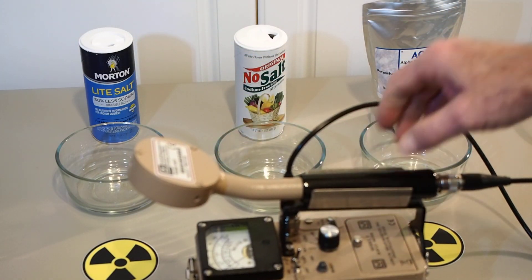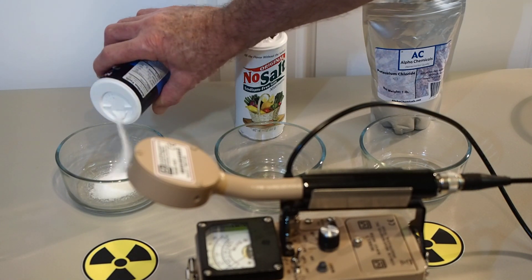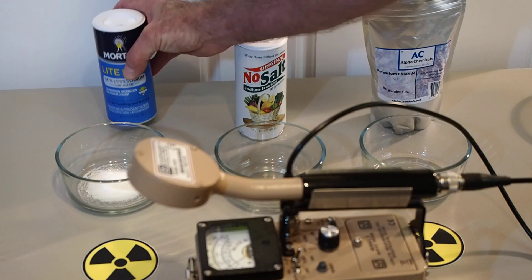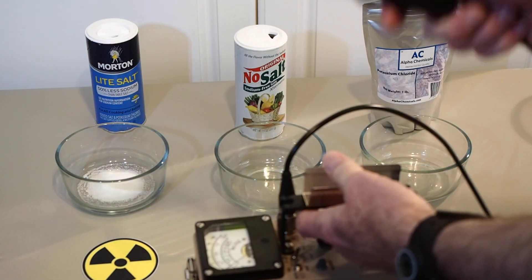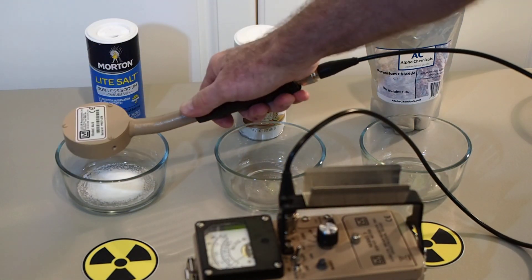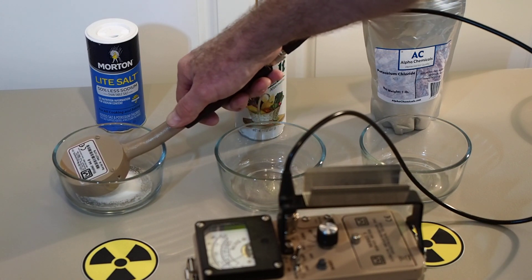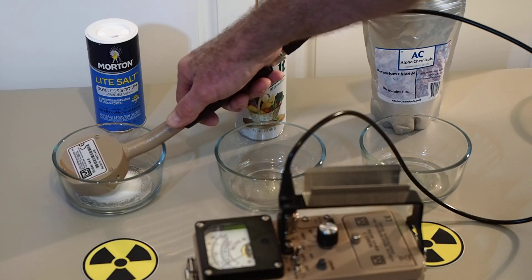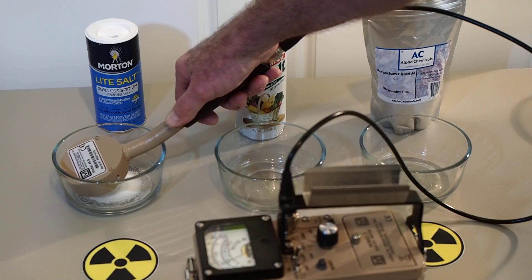So first of all, let's pour a little bit of this Morton light salt into this bowl. That should be enough. And we'll take our Ludlum 44.9 detector here, put it about an inch away from the exposed Morton light salt that's in the bowl, see what kind of reading we get. We don't want to touch the salt directly because we don't want to contaminate our detector. But we can get pretty close.